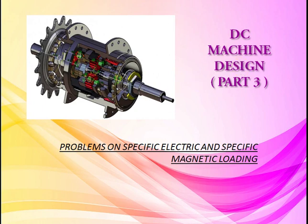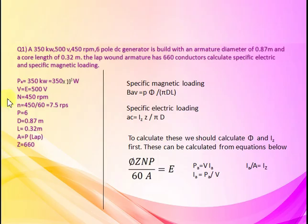Problems on Specific Electric and Specific Magnetic Loading. A 350 kW, 500 V, 450 RPM, 6-pole DC generator is built with an armature diameter of 0.87 m and a core length of 0.32 m. The lap wound armature has 660 conductors.